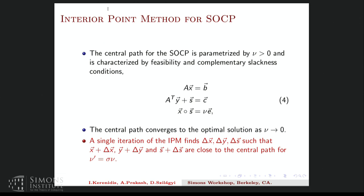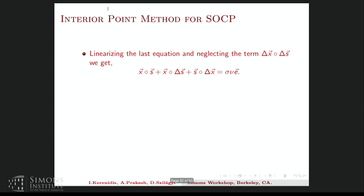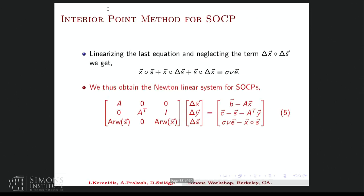So what are the linear systems that one needs to solve to make this iterative improvement? So they are obtained by linearizing the last equation which was given in terms of the Jordan product and neglecting the quadratic term. So if I linearize it and neglect the quadratic term, I arrive at this Newton system. And we can see that for the SOCP, this system is rather simple. Like it just has the input matrices A and A transpose and these arrow matrices which can be constructed directly from the solutions s and x.